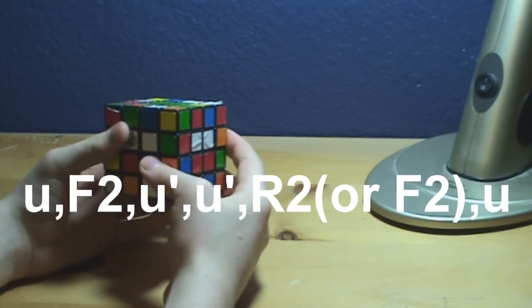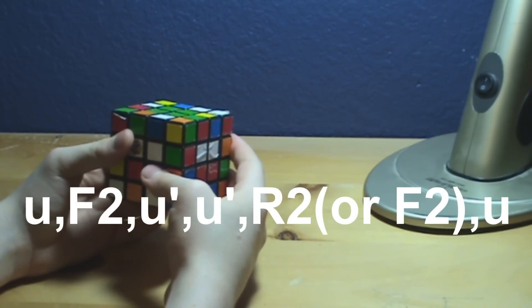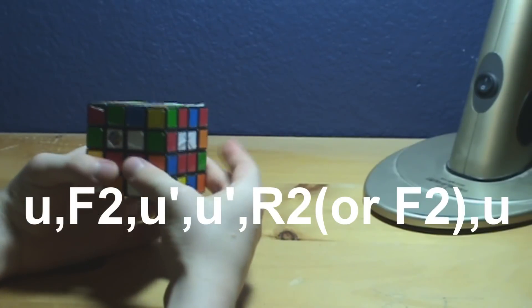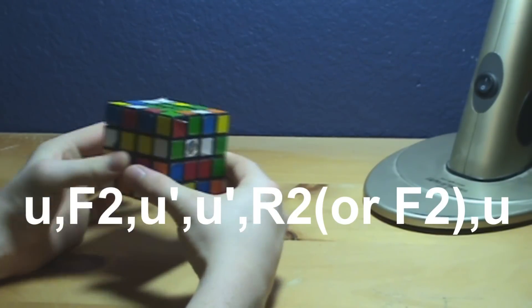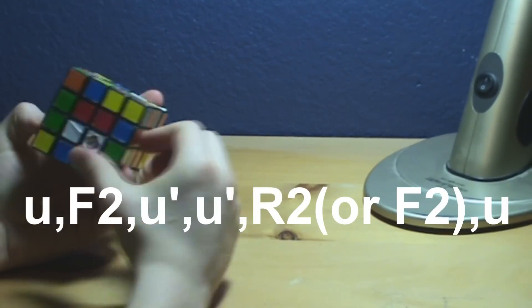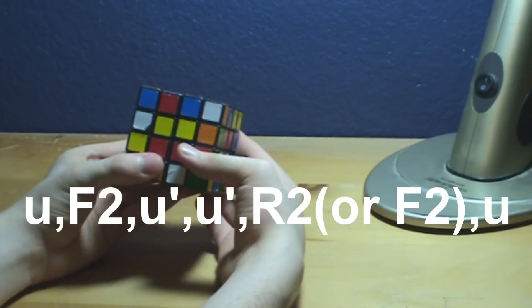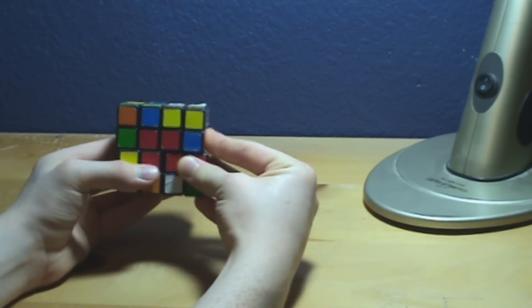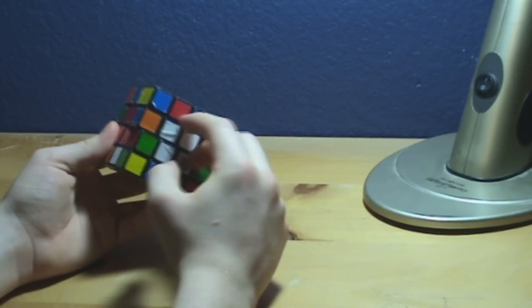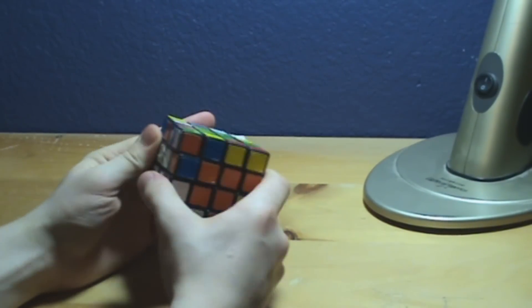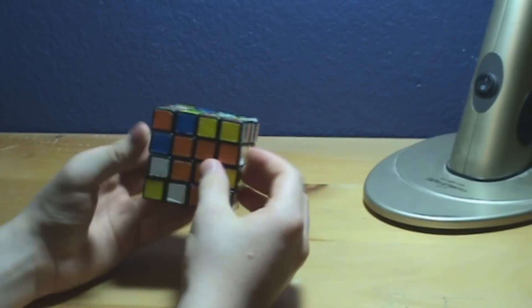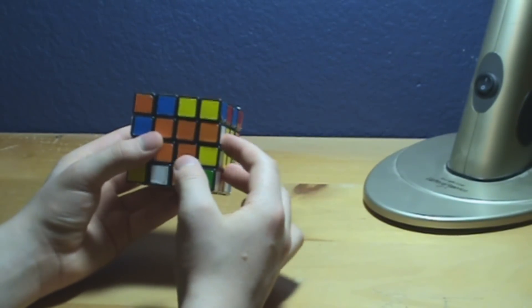So, that's u, f2, little u reverse. And then, you'll just do it, little u reverse, R2, or f2 if you're facing that way. And then, little u, little u. So, now we have those two lined up. And so, we have all of our centers solved. And you'll just do that to switch all the centers.